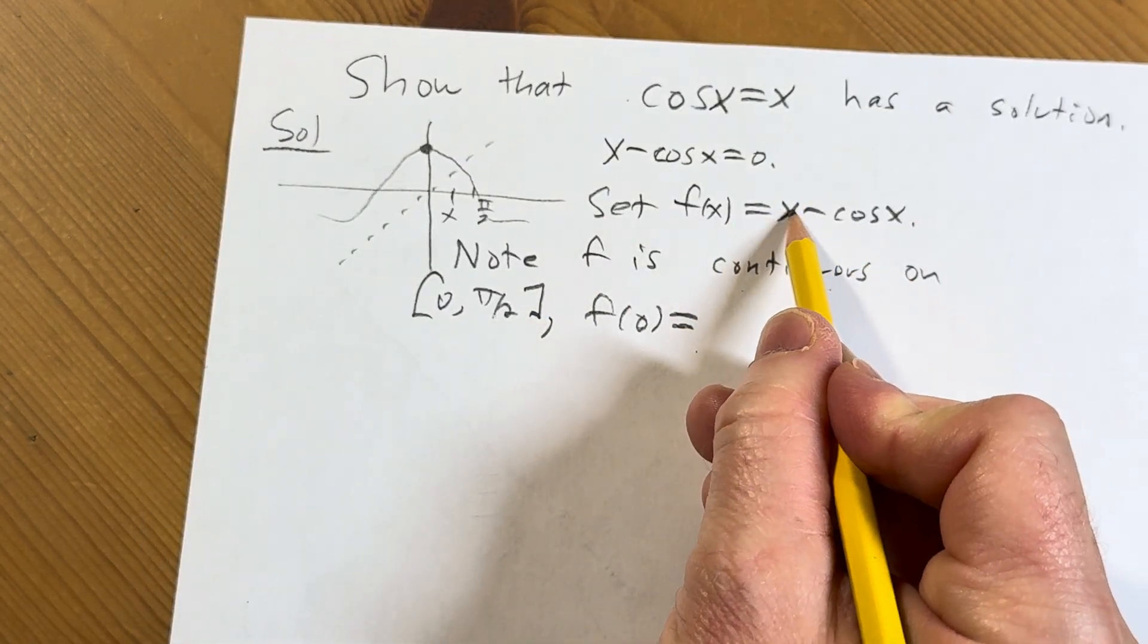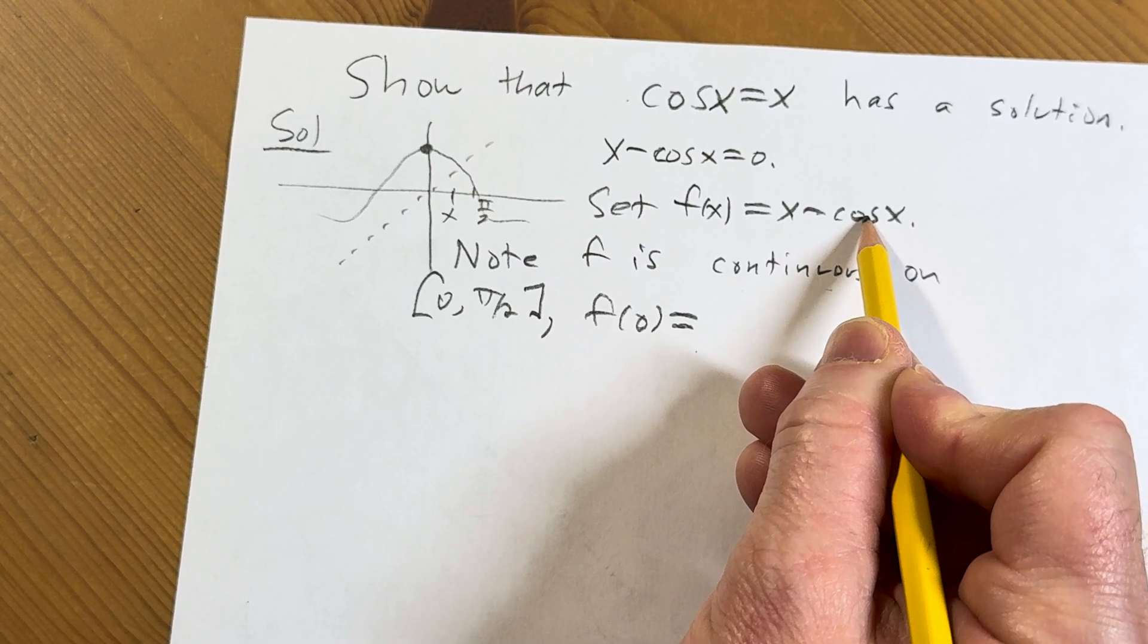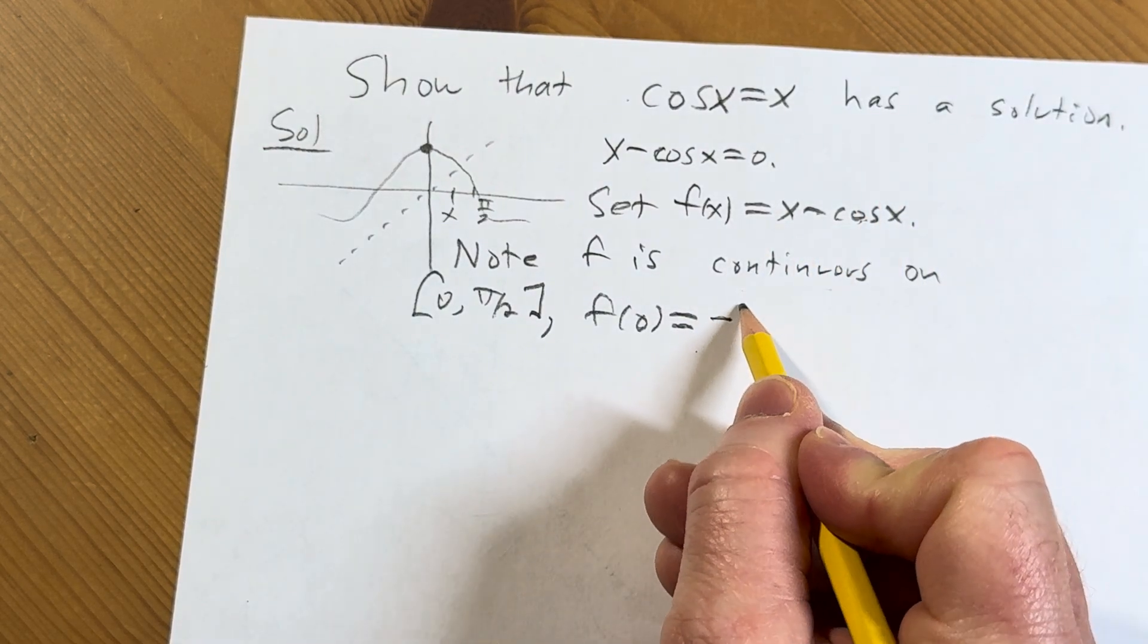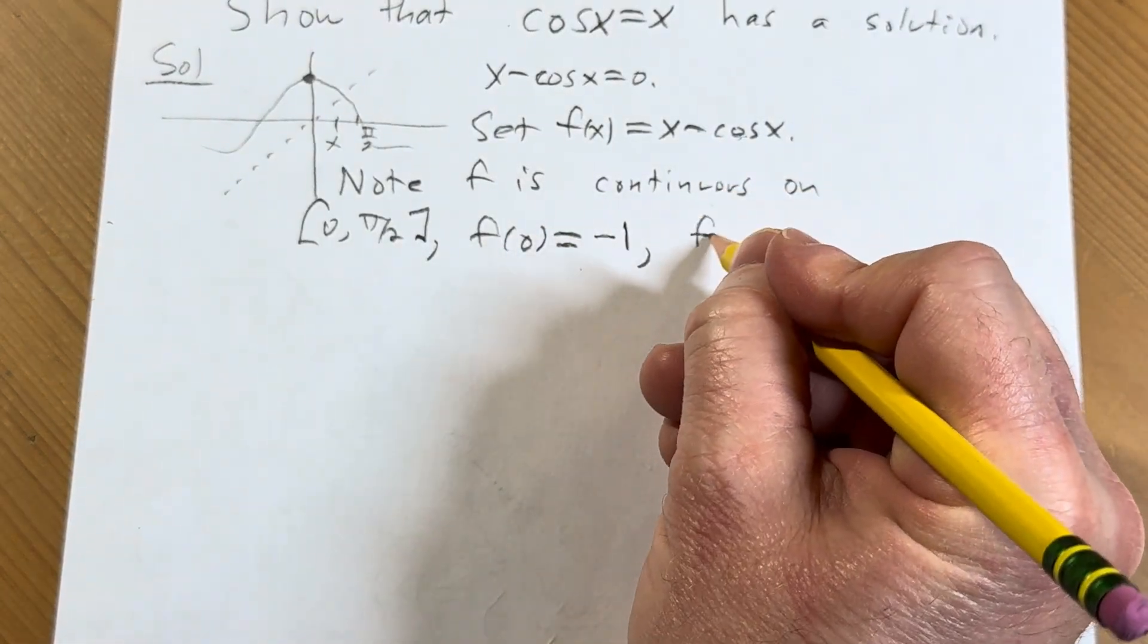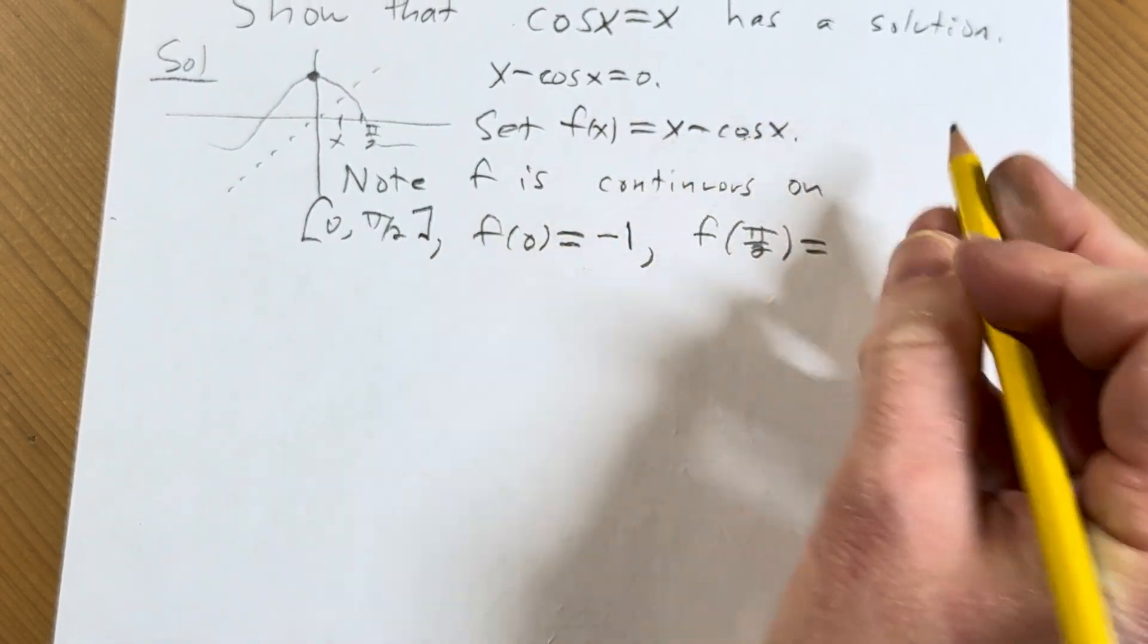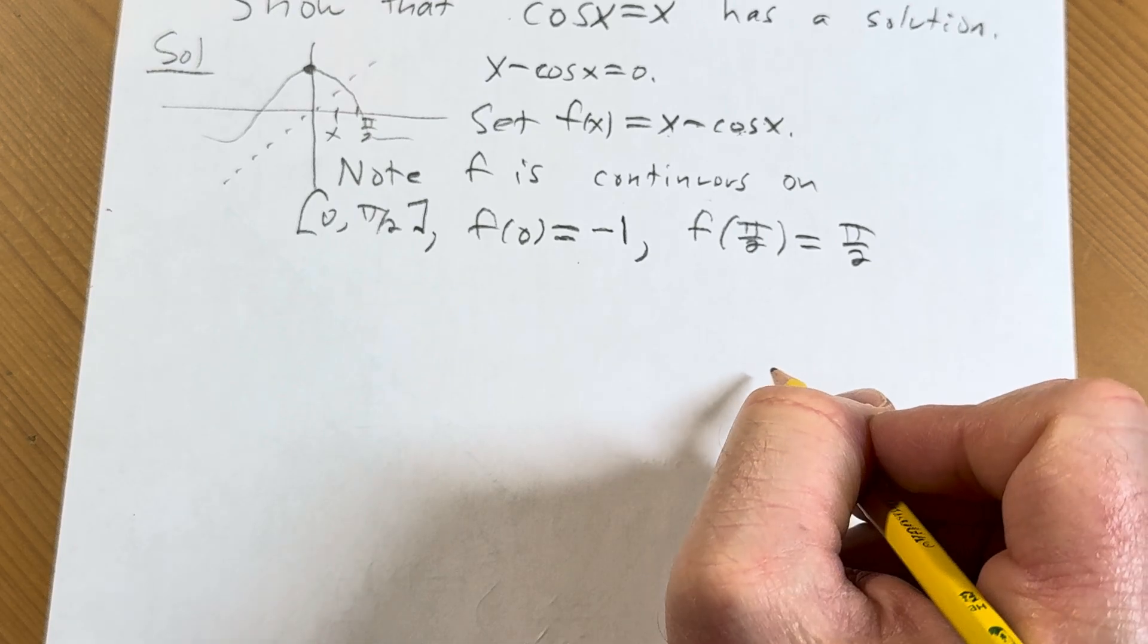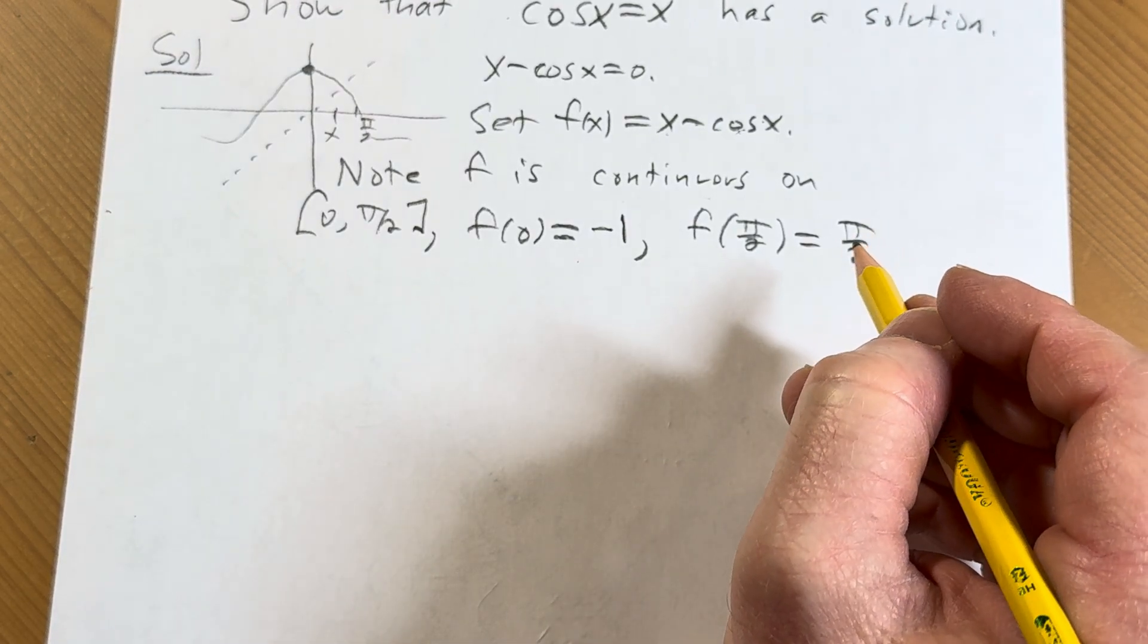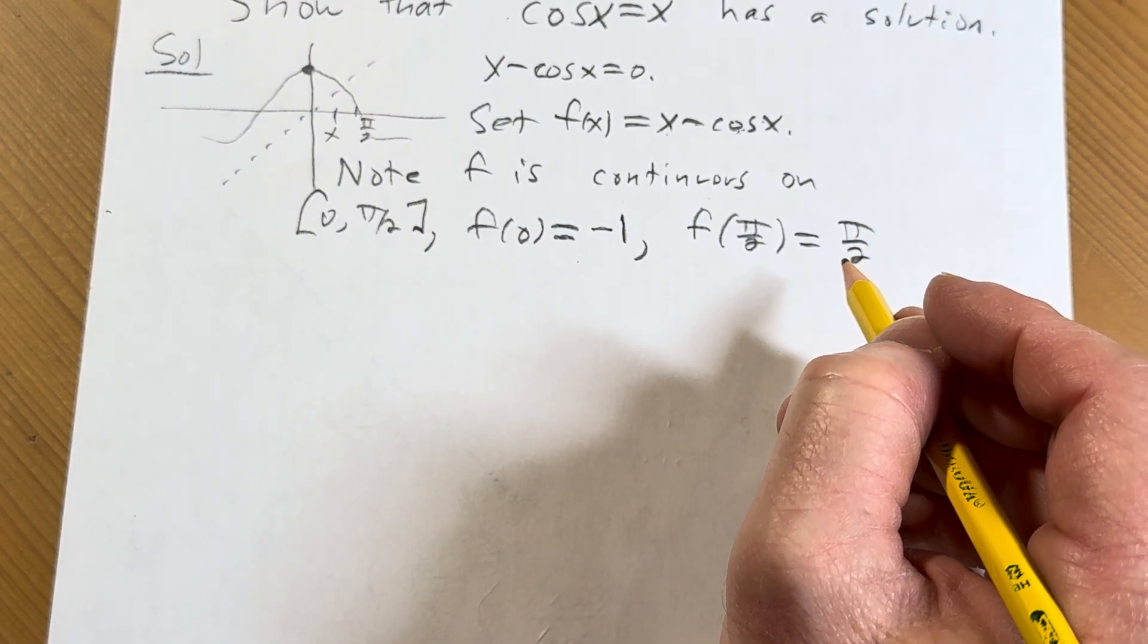f of 0, well f of 0 is 0 minus cosine of 0. Cosine of 0 is 1, so f of 0 is minus 1. f of pi over 2 is going to be pi over 2. Cosine of pi over 2 is 0.